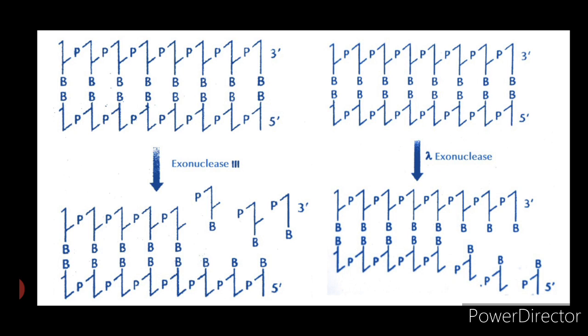First, BAL31. This enzyme was isolated from Alteromonas espejiana. It cuts DNA from both the ends.